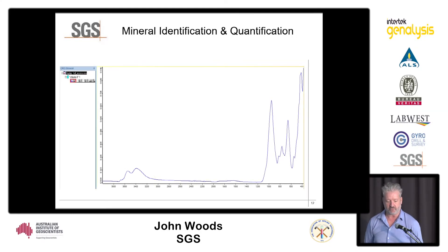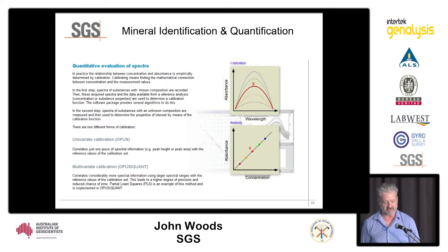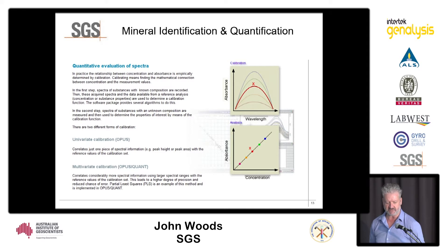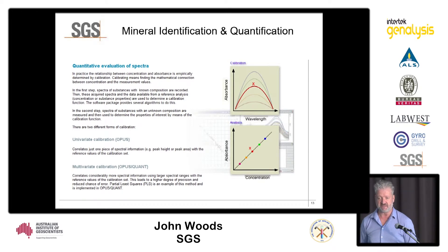For quantification, this is a typical spectra from the instrumentation. We take a couple of different approaches to calibration. You can go for a univariate calibration approach, selecting particular areas of the spectra associated with specific minerals and giving a calibration based on those specific regions, or you can carry out a multivariate approach, where it takes the whole spectral region and using artificial intelligence identifies the key spectral regions and responses to give you mineralogical concentrations.